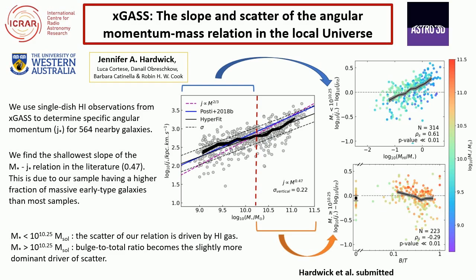Shown here in the centre is the stellar specific angular momentum–stellar mass relation, and in the thin black line I am showing the best fit to that relation, which we calculated using a Bayesian fitting tool called HyperFit. The slope we determined for this relation was 0.47, which is actually the shallowest slope in the literature to date. We show that this slope is highly dependent on the mix of galaxy types in your sample — because our sample has a higher fraction of high mass early-type galaxies, our relation is pulled down at higher stellar masses, since early-type galaxies have less angular momentum on average. This is shallower than previous works, such as the Posty 2018 work shown in the blue line, which finds a slope of 0.55.